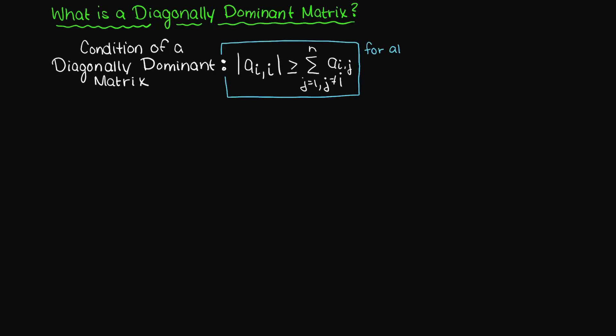The magnitude of our diagonal elements of a square matrix A must be greater than or equal to the sum of all the other non-diagonal elements within the same row, with the condition that at least one of the rows must be strictly greater than.